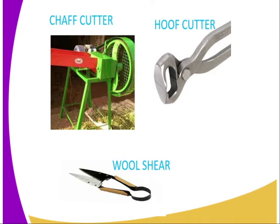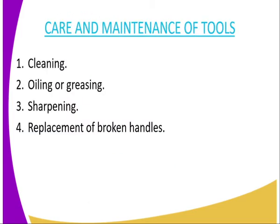Then we have the hoof cutter, which is used in trimming overgrown hooves. On the other hand, we have the wool shear, which is used when shearing or cutting the wool in sheep, especially Merino sheep.